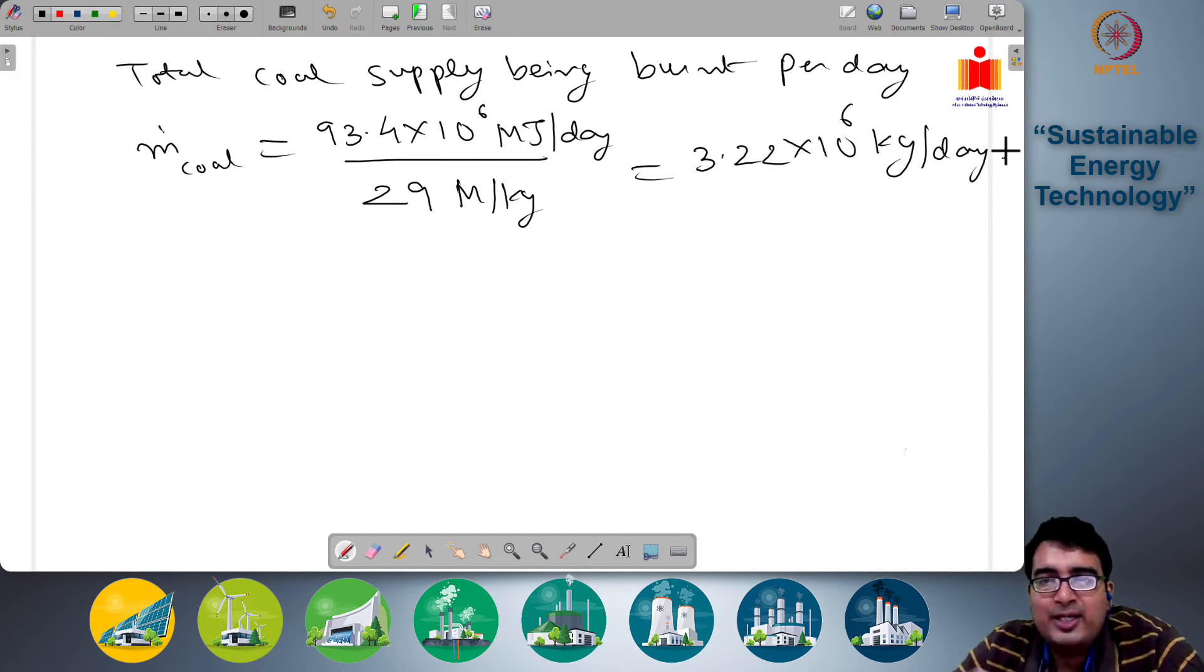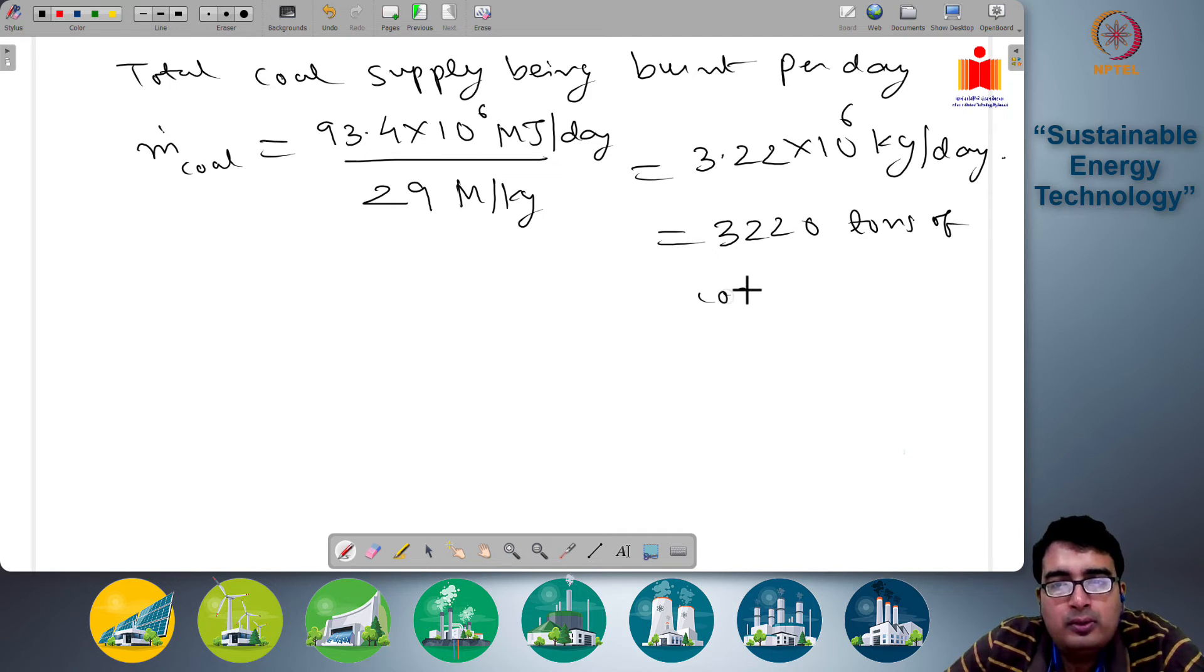Now 1 ton is 10^3 kgs, so this is equal to 3220 tons of coal per day.